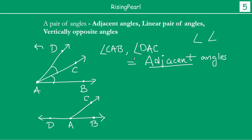So in this example, the adjacent angles — angle CAB and angle DAC — are still adjacent angles, but we also call them a linear pair of angles. If you take the measurement of each angle — say x and y — if you add x and y you should get 180 degrees, because they have formed a straight line with D, A, B collinear. So if x plus y equals 180 degrees, we call these two angles a linear pair of angles.